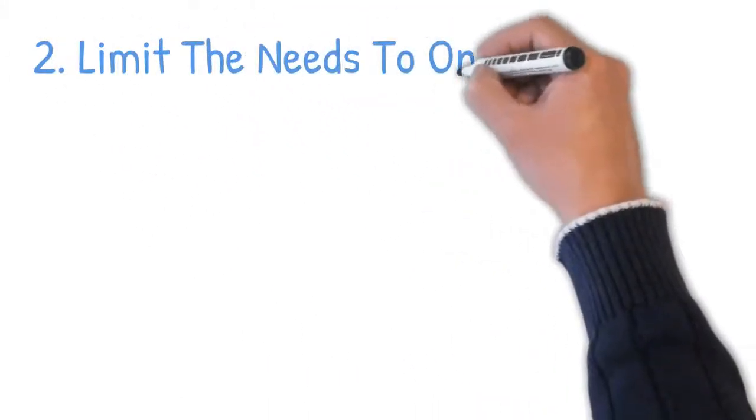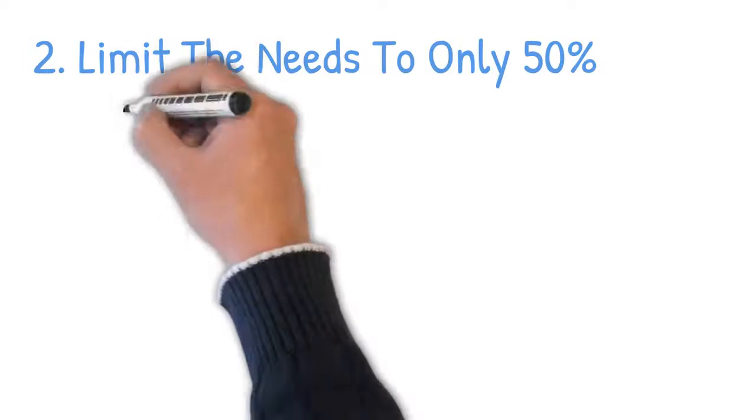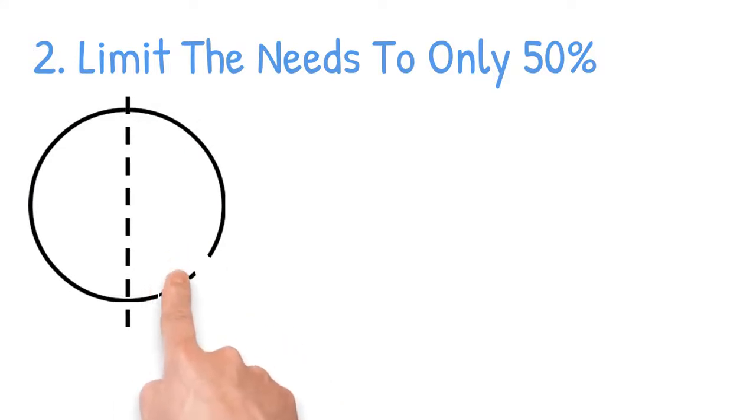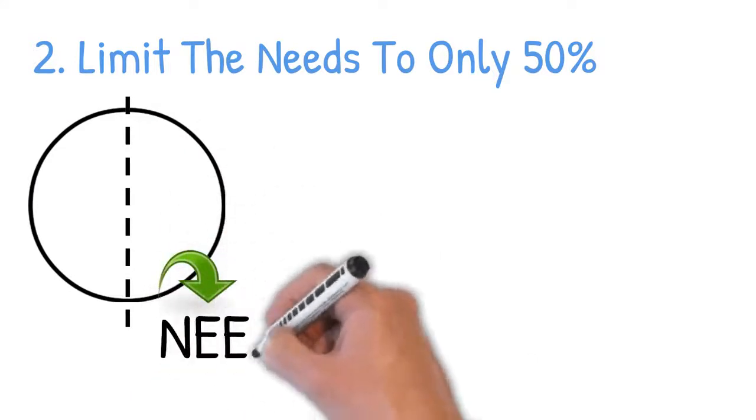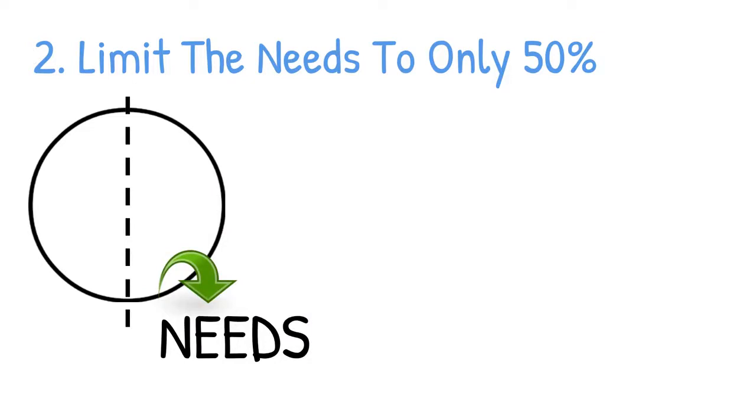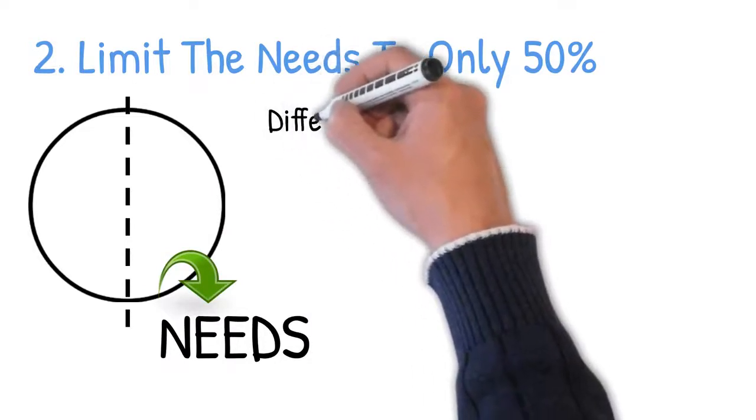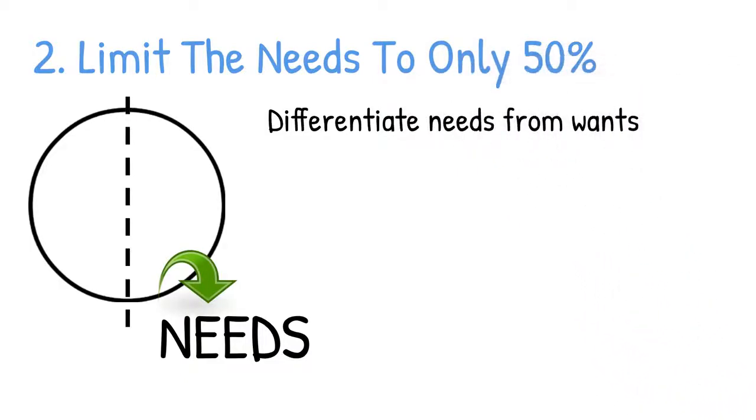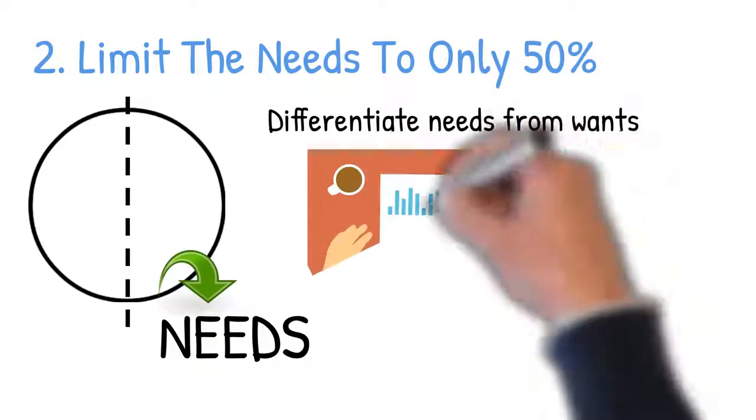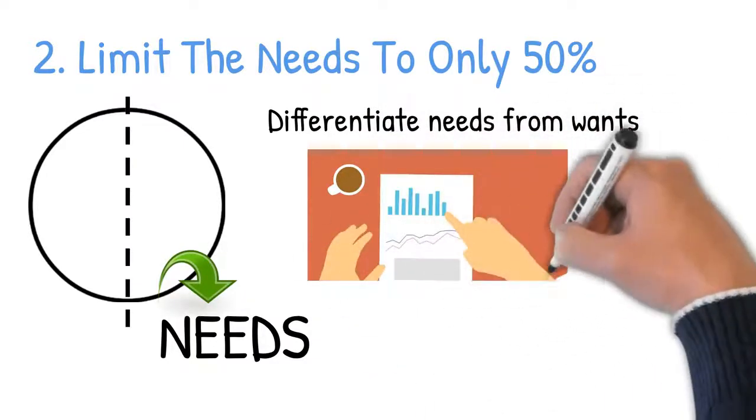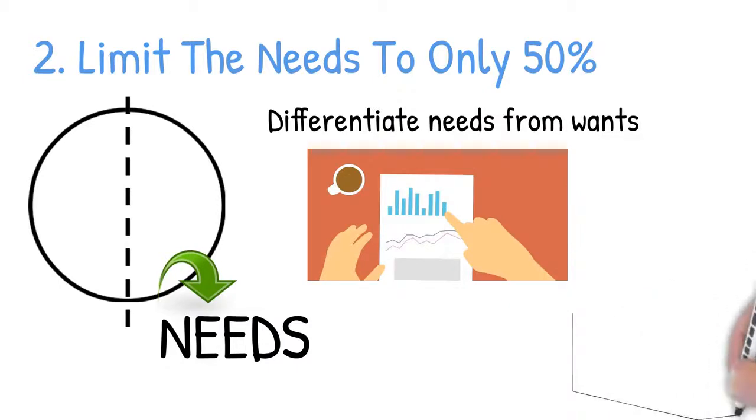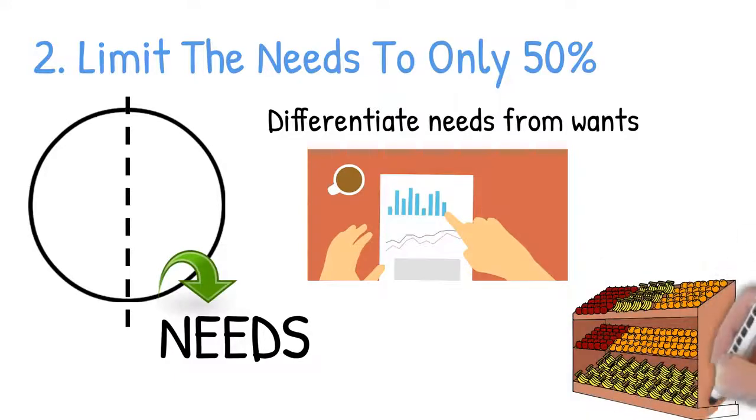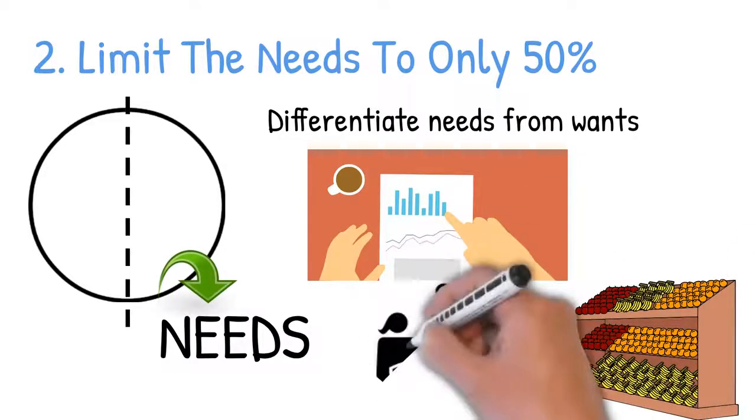Step 2: Limit the needs to only 50%. After you establish your after-tax income, you need to split it into two and dedicate the first half to your needs. It doesn't mean that you have to spend half of your after-tax income, but Warren and Amelia advise that you don't go beyond the limit. What's important here is that you know how to differentiate needs from wants. As I mentioned, needs are those expenses that are crucial for your survival. That means they are costs you cannot forgo. For example, you can't forgo buying groceries, but you can forgo dine-outs. So groceries are needs, while eating out is a want.